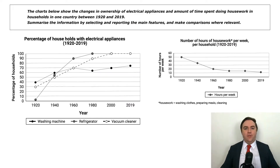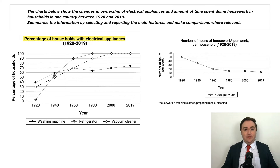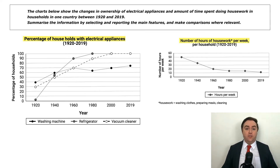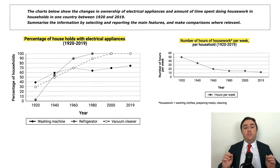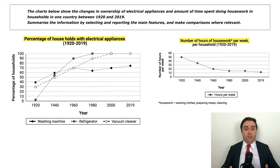Let's start with an example of the bar graph. The prompt is to report on the households with electrical appliances, which is the top graph, and the number of hours of housework, which is the lower graph. Our first step is to analyze the graphs to choose our main features.